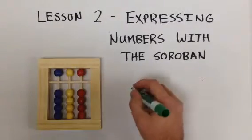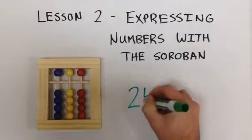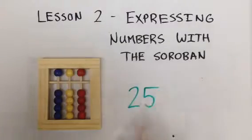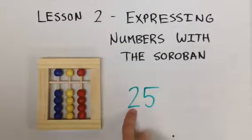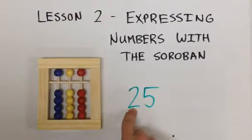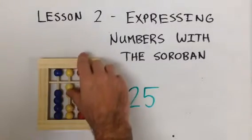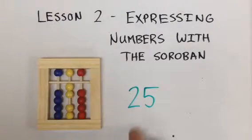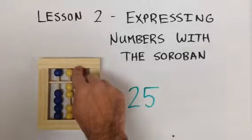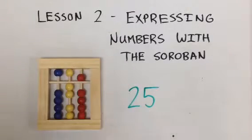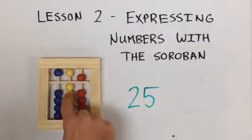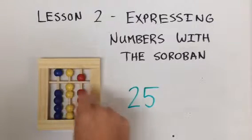Go ahead and do the number 25. Starting with the two in the 10s, we go to our yellow column and move up two. Then we go to our 5 in our 1s and move down the upper red bead. This shows us the number 25.